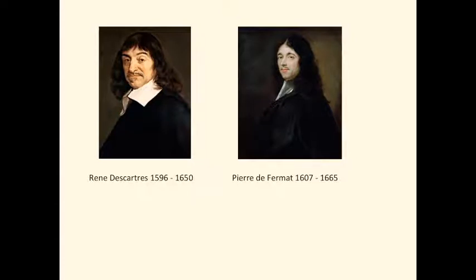Fermat is one of Europe's greatest ever mathematicians. So it was in the 1630s, about 400 years ago, that coordinate geometry started.